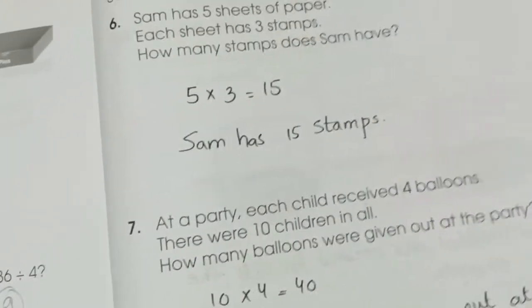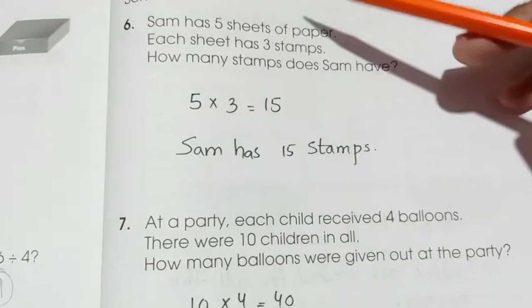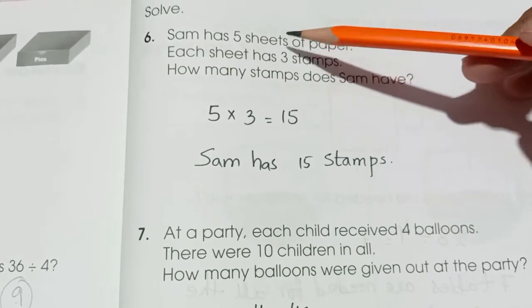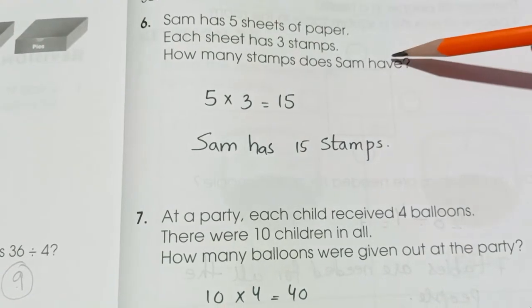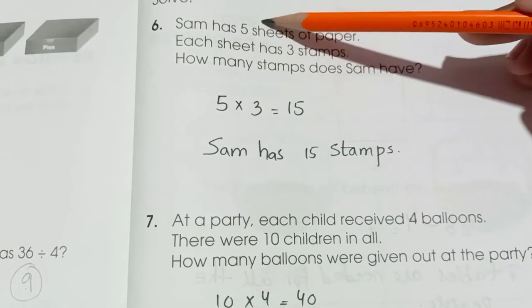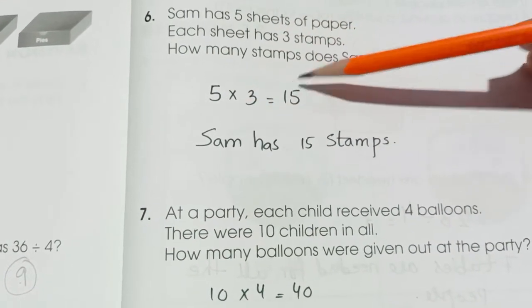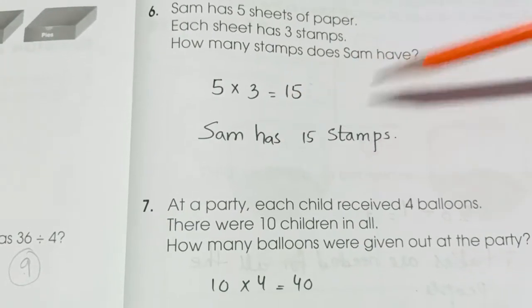Page number 197, question number 6. Sam has 5 sheets of paper. Each sheet has 3 stamps. How many stamps does Sam have? So we have 5 sheets, 3 stamps. 5 threes are 15. Sam has 15 stamps.